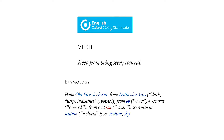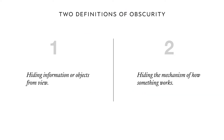As usual, it's often good to start and synchronize on definitions. The definition I think is most powerful here is the verb form from Oxford: to keep from being seen, concealing, or hiding. But here's the problem — there are actually two definitions of obscurity. There's another definition that's used in some cases, but it's based on hiding the mechanism of how something works.